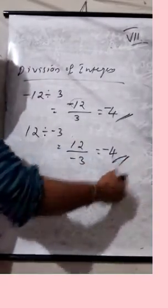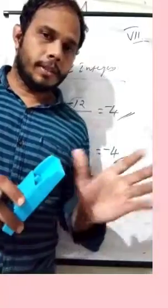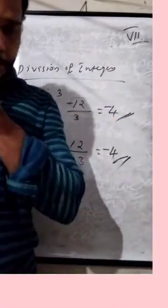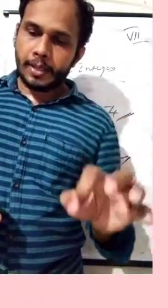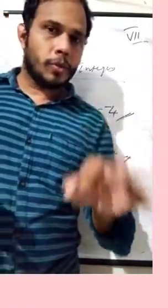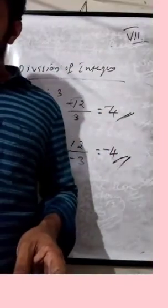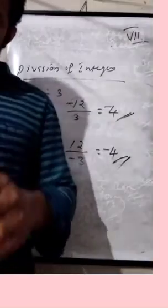This is the method for division of integers. Page number 22, try this: find minus 100 divided by 5, minus 75 divided by 5, minus 81 divided by 9, minus 32 divided by 2. You should do those.